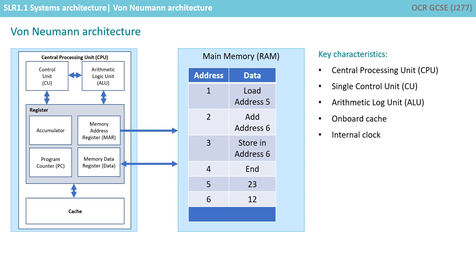A von Neumann architecture has key characteristics. It has a central processing unit, a CPU, with a single control unit. Inside, it has an arithmetic logic unit, an ALU, onboard cache — which is small amounts of high-speed memory that helps the control of instructions and data around the CPU — and also an internal clock, which provides a pulse at a constant rate to synchronize components.